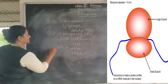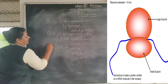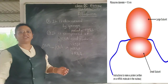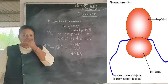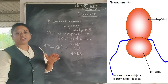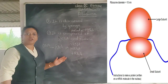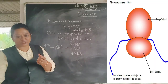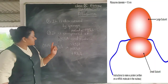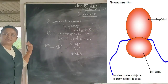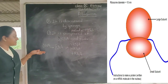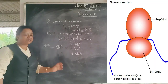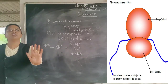RNA is derived from DNA. DNA stands for deoxyribonucleic acid, and RNA stands for ribonucleic acid. The difference between DNA and RNA is in the sugar molecules — one oxygen is less in RNA while one oxygen is more in DNA. So it is called deoxyribonucleic acid, meaning one less oxygen.